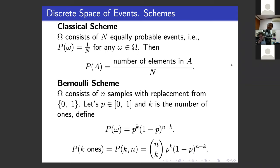In the discrete case there are two main schemes of probability space: the classical scheme and the Bernoulli scheme. In the classical scheme, the space of elementary events contains a finite number N of elements, and we assign probability uniformly — one over N to each element. The probability of a more complex event is defined as the number of elements in that event divided by N.